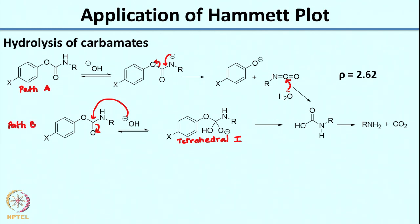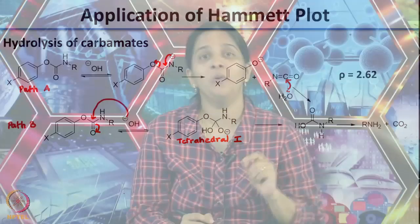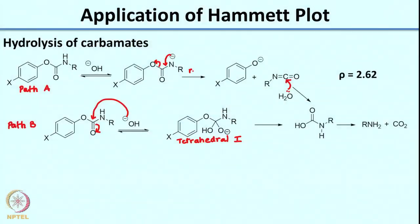When the Hammett analysis was done for this reaction, the rho value found was 2.62. Now, based on the positive slope — indicating electron-withdrawing groups increase the rate and electron-releasing groups decrease the rate — which of these pathways is operative: Path A or Path B? A useful hint: acid-base equilibria happen quickly compared to bond cleavage steps. So for Path A, the rate-determining step is the second step, whereas for Path B, the rate-determining step is the first step.